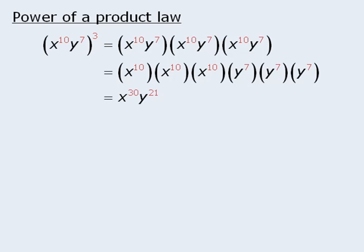Notice that if we take this exponent 3 and multiply it by this exponent 10, we get this exponent 30. Similarly, if we multiply 3 by 7, we get 21.